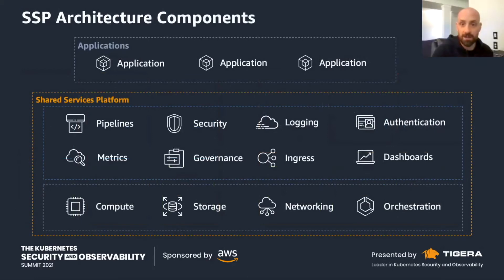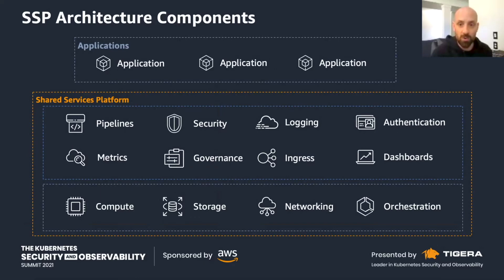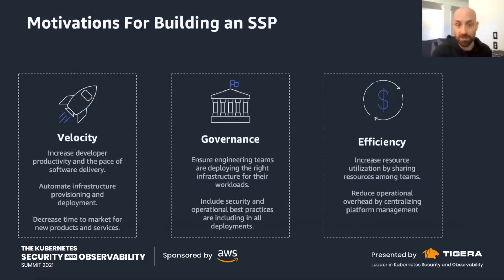This is a high-level overview of the components that make up a shared services platform based on what we see with our customers. In each component there's a wide variety of tools — AWS native, open source, or partner ISV. It's up to the platform team to standardize on tools. From an application perspective, as a developer, you think of this as a batteries-included model. You're onboarding into the platform and getting security and visibility taken care of just by onboarding. Mikhail is going to show you how to actually put this into practice.